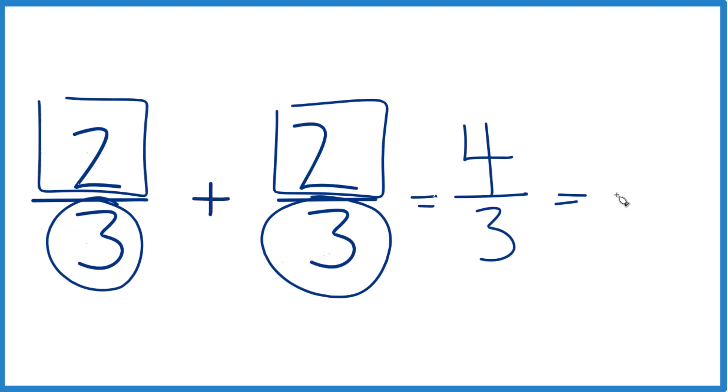Let's see, 3 goes into 4, 1 times 3 is 3, and we'd have 1 left over. Bring this 3 across, and we get 1 and 1 third.